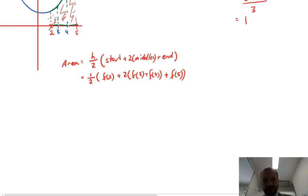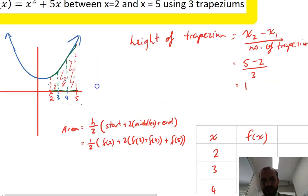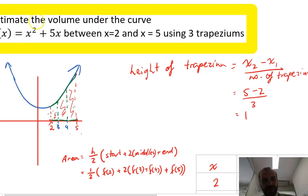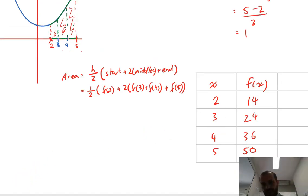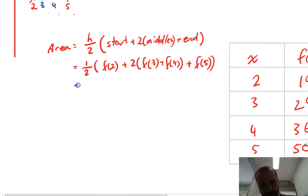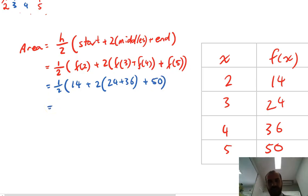To make life easier, I'll put the values into a table. The x values are 2, 3, 4, and 5. Putting x = 2 into x² + 5x gives 2² + 5(2) = 4 + 10 = 14 — that's the start value. Evaluating at 3, 4, and 5 gives the two middle values and the end value. The calculation is then one-half times (14 + 2(24 + 36) + 50), giving approximately 92 units squared.